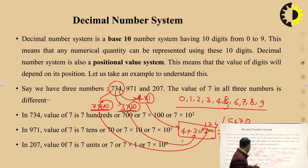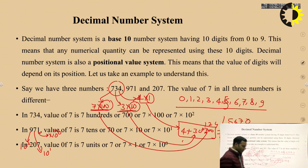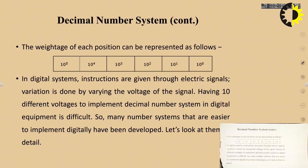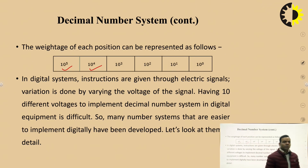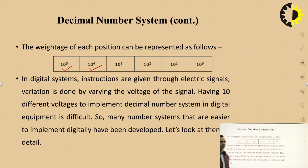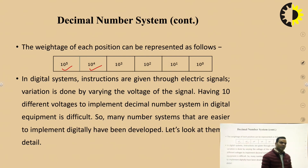If we consider the number 971, the rightmost digit is multiplied by 10 to the power 0, the next digit by 10 to the power 1, and the next by 10 to the power 2. For more digits you can continue with 10 to the power 4, 10 to the power 5, and so on. This positional weight concept will be very useful when we deal with other number systems like binary, octal, and hexadecimal.